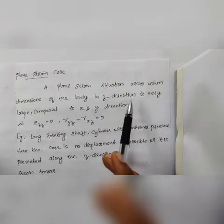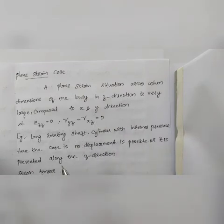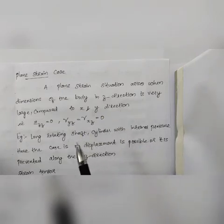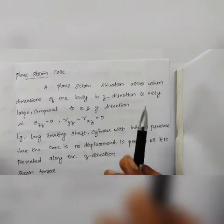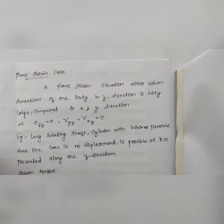For the plane strain case, the situation arises when the dimension of the body in the z-direction is very large compared to the x and y directions. In plane stress the z-dimension is very small; here it is the other way — the z-dimension is very large. The body has length, breadth, and height, and the dimension in the z-direction is much larger.